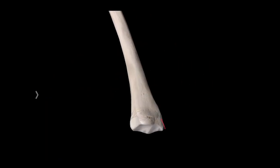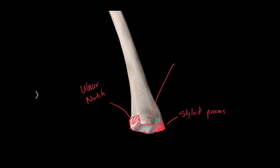On the distal end, we have another stylus-looking projection, so we're going to call this the styloid process of the radius. We have a notch where the ulna fits in, so we call this the ulnar notch of the radius. Right here we have a surface that articulates with carpal bones, so we're going to call it the carpal articular surface of the radius.